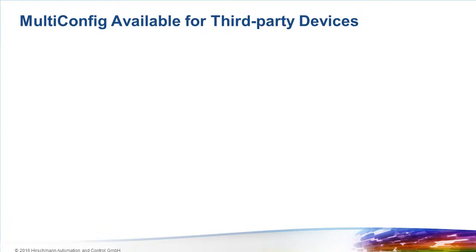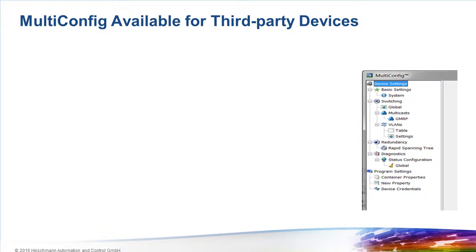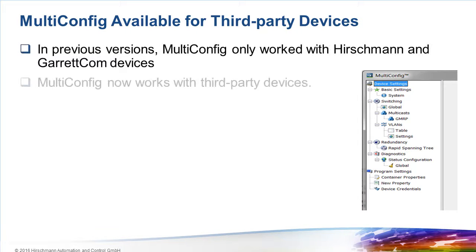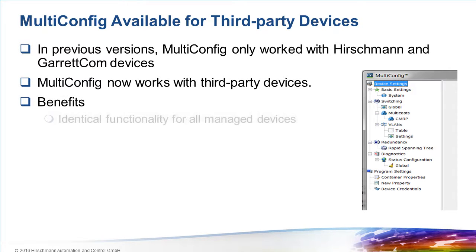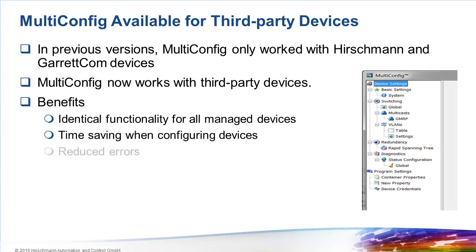Think of a large network. Are all the infrastructure devices from Hirschmann or Garrettcom? This is very unlikely. Usually, large networks consist of equipment from multiple manufacturers. Multi-config, which allows many devices to be configured simultaneously, is one of the most valuable functions in Industrial HiVision. Until today, multi-config could only be used with our own devices.